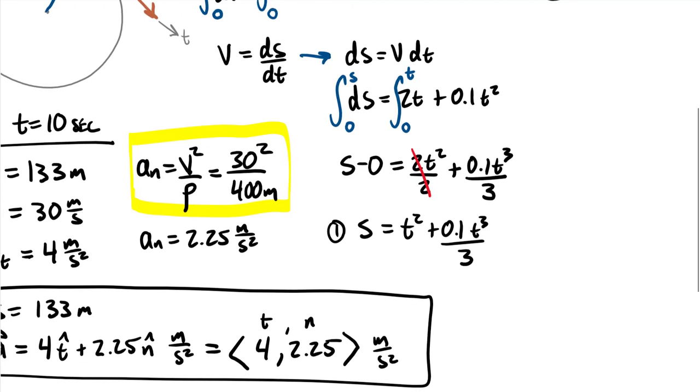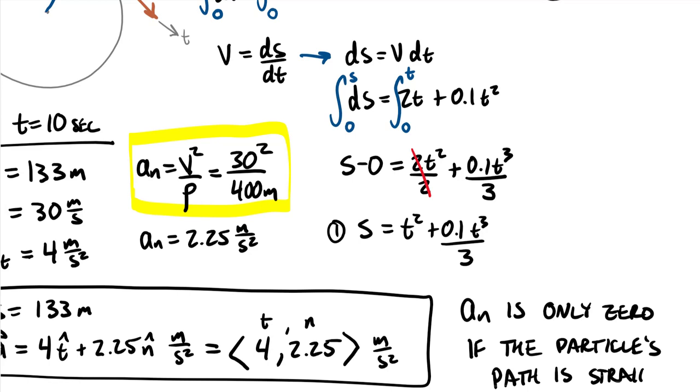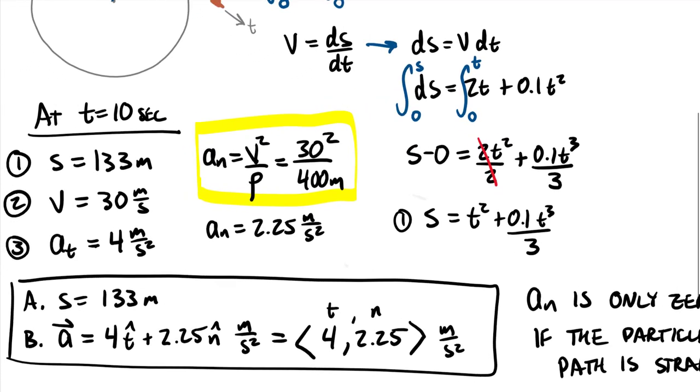And the cases where it will be zero are actually only cases where your particle has a straight path. aN is only zero if the particle's path is straight. If there's any curvature to a path of a particle, it will have a normal acceleration. So always assume that it exists until you can prove that it doesn't. Hopefully that was a worthwhile example for you all, and that you're having a really wonderful day.